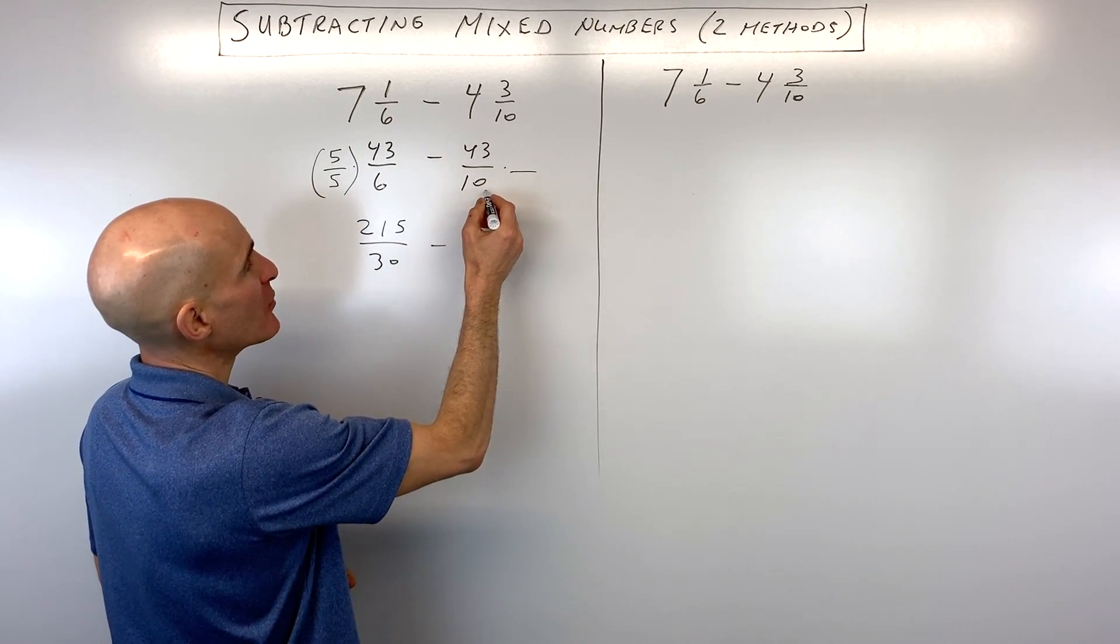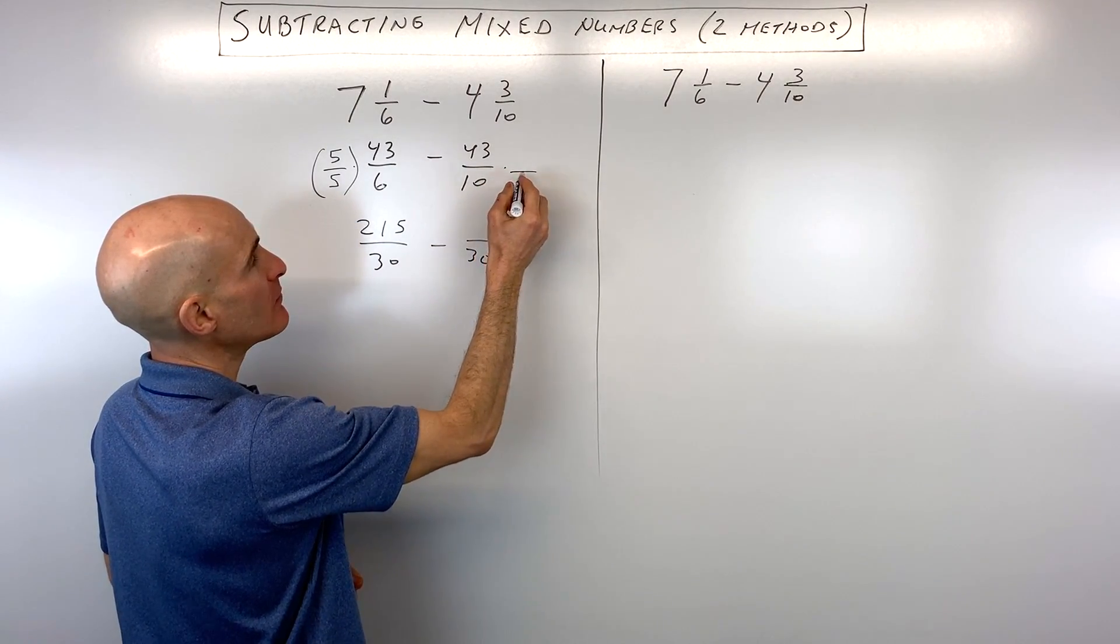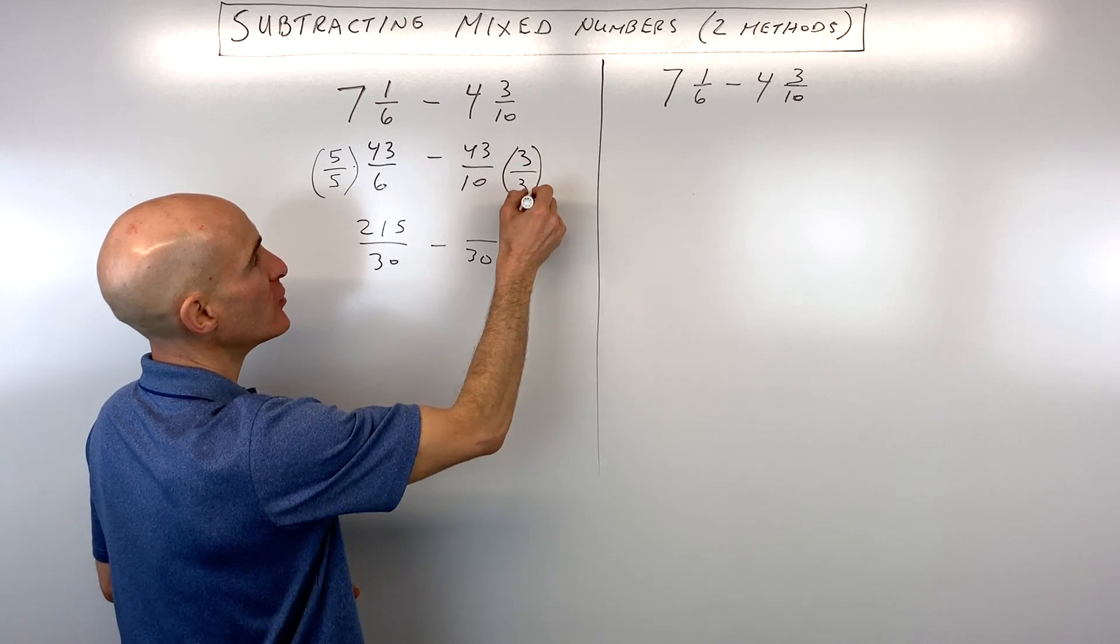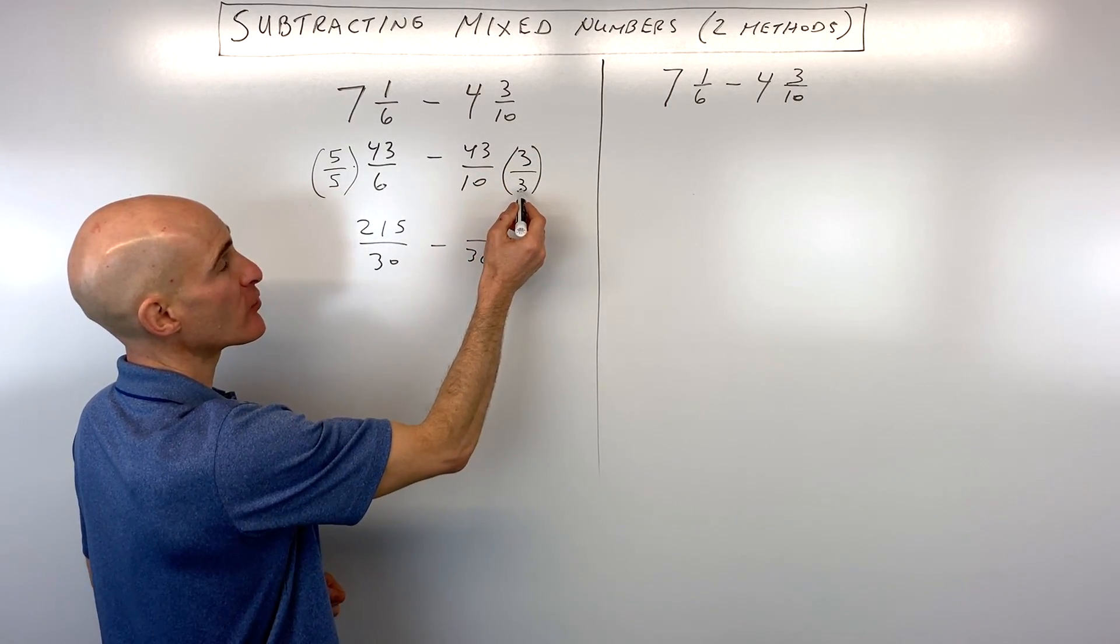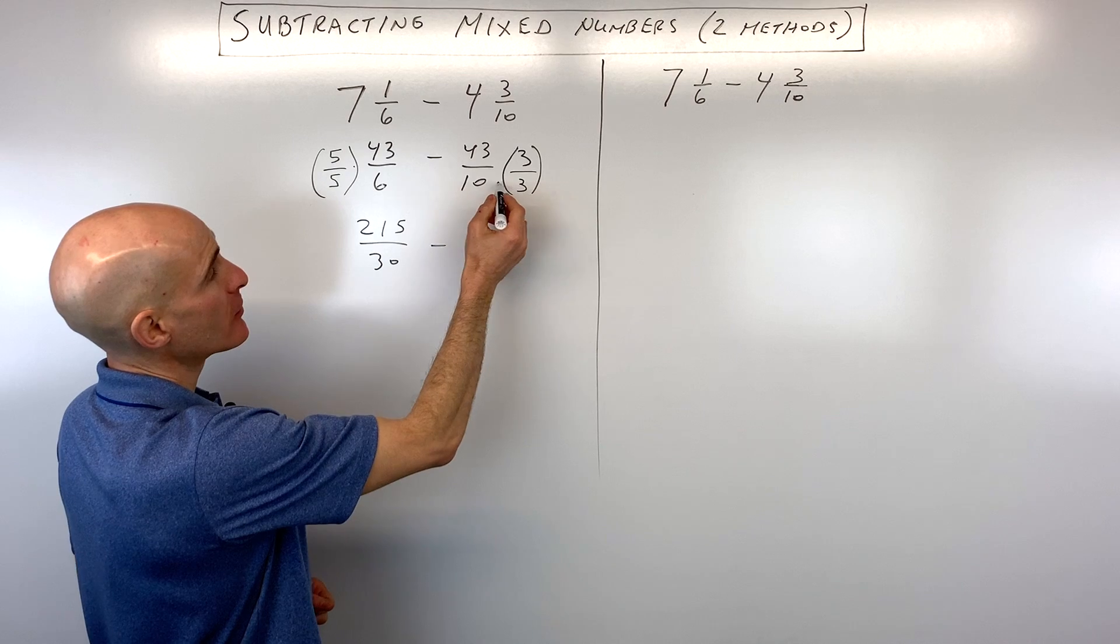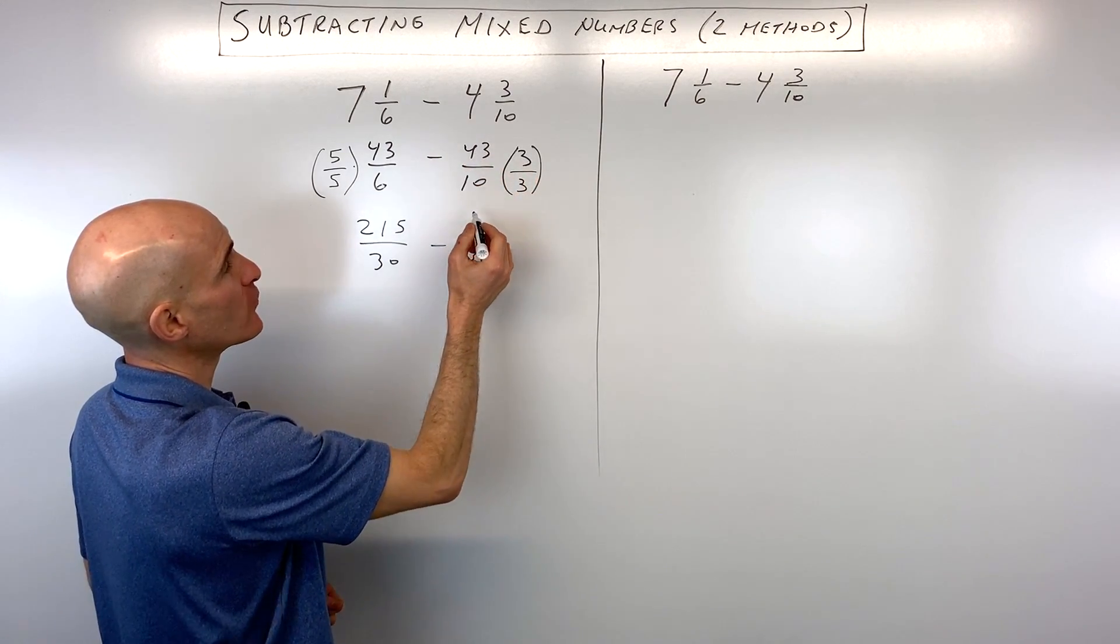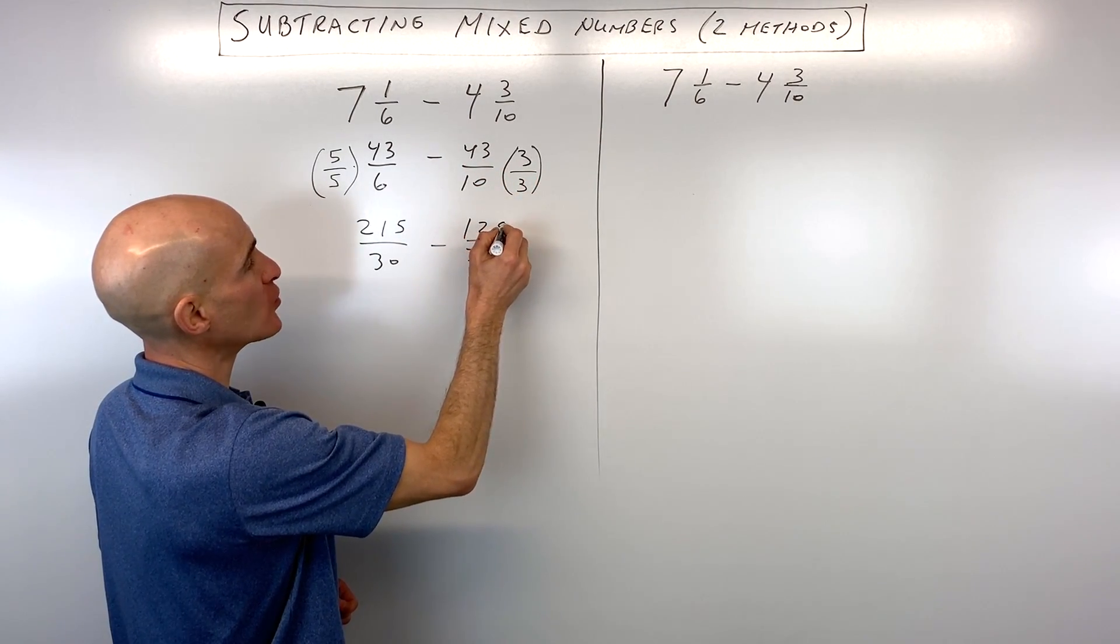And over here, we want to make this denominator 30. We're going to multiply the bottom by 3. But if we multiply the bottom by 3, we have to multiply the numerator by 3. Again, 3 divided by 3 is 1, so it's not going to change the value of this fraction. 3 times 10 is 30. 3 times 43 is 129.